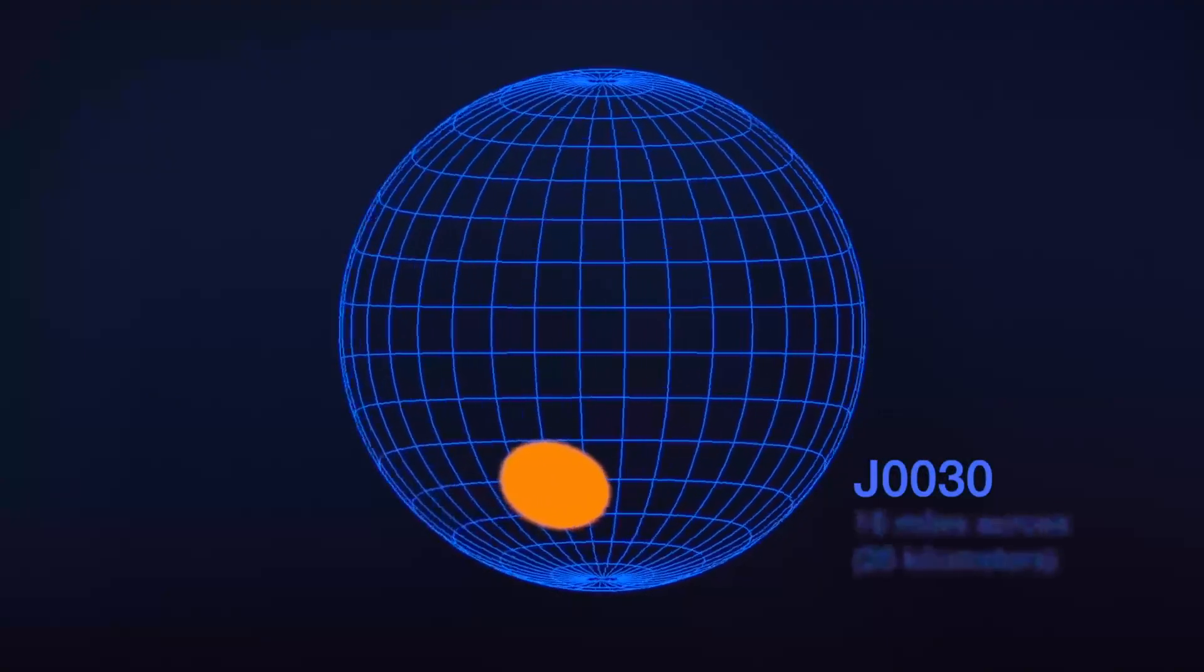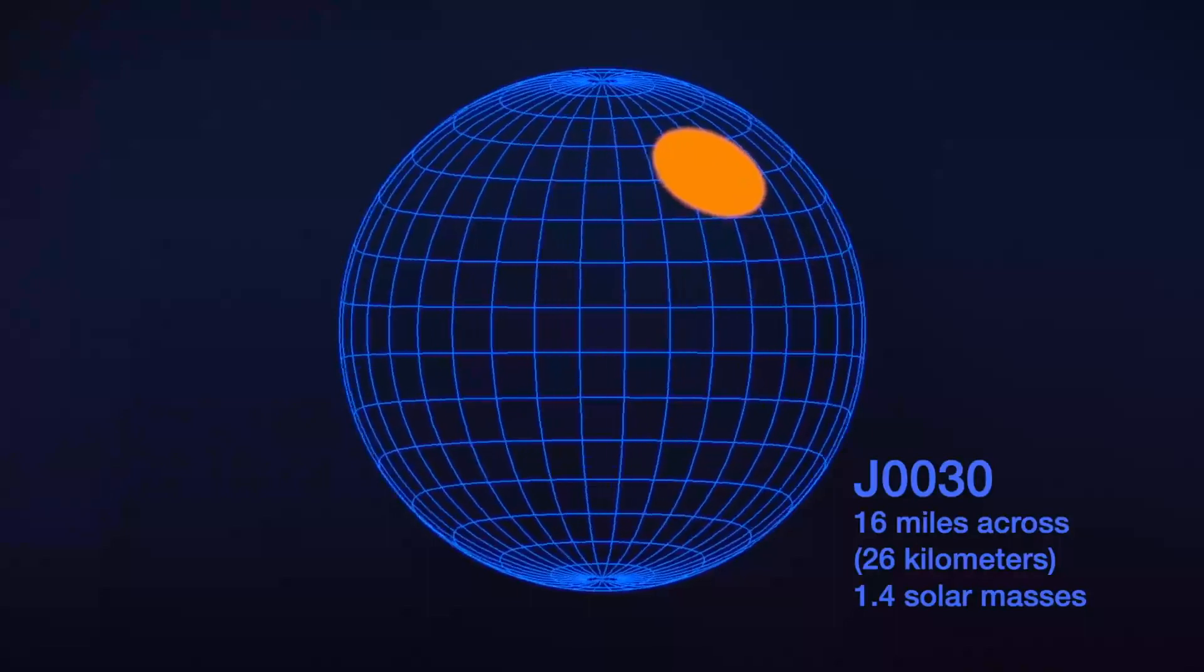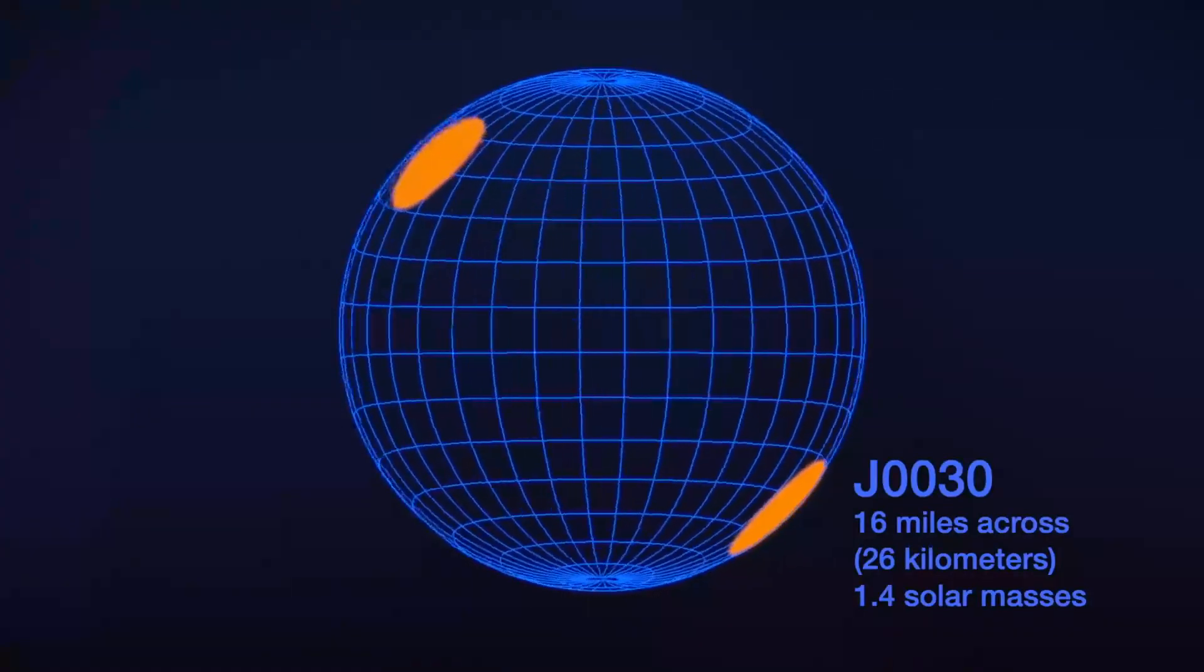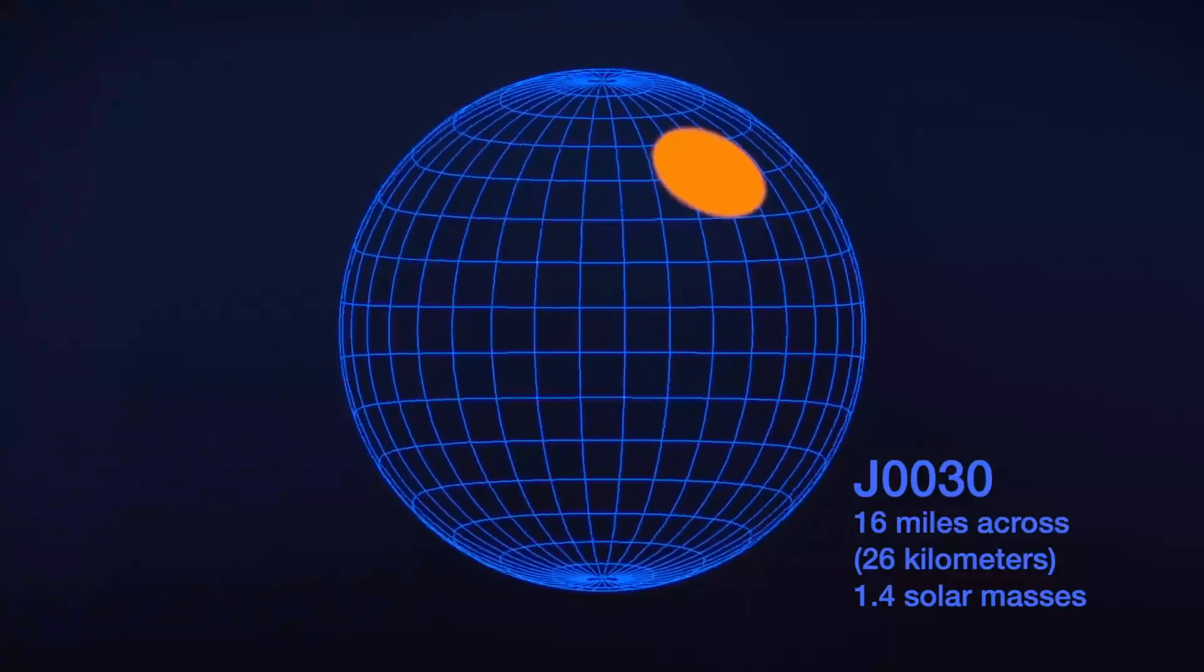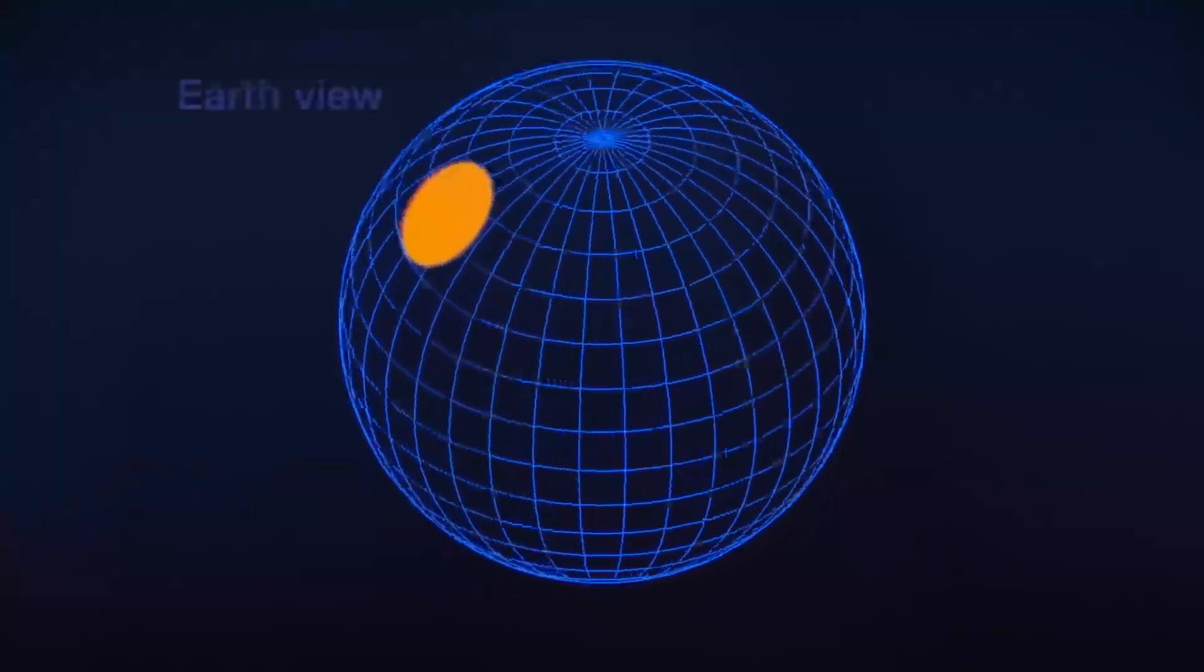The pulsar is around 16 miles across and about 1.4 times the Sun's mass. This represents the most precise measurement yet of a pulsar's size, with an uncertainty of less than 10%. The spots themselves don't match the textbook image, though.